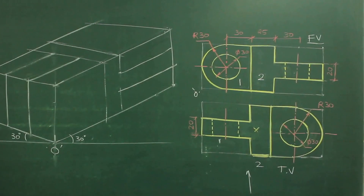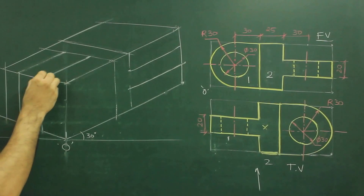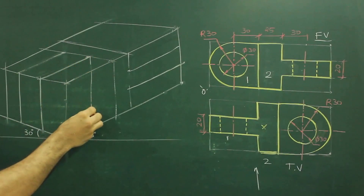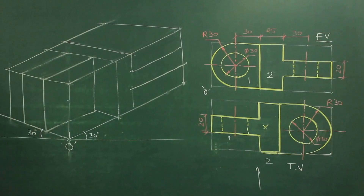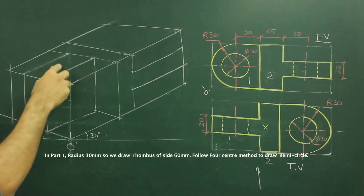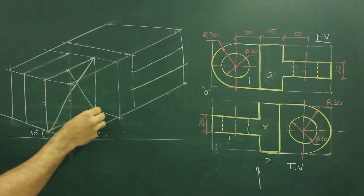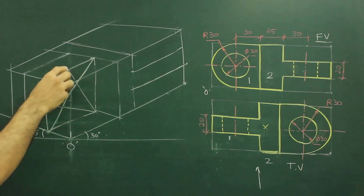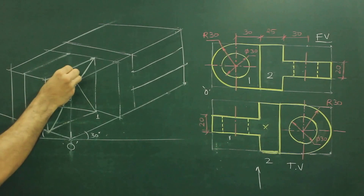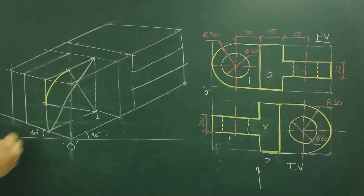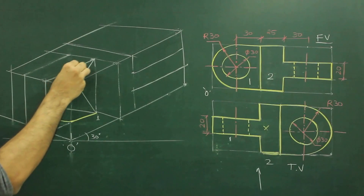Now we will see part 1. In part 1, we have radius 30, so we need to draw a rhombus of 60. That rhombus 60 cannot be drawn here — we need to draw it inside. We have already gone inside by 20, so from here we can draw rhombus 60 and join this also. Now we will draw a circle with radius 30, so diameter 60, rhombus 60. We will draw the longest diagonal, mark the midpoints, and from those points join lines — this to this and this to this. From point 1 we can draw this arc, and from point 2 we can draw this arc. We extend this, so this much will be dark.